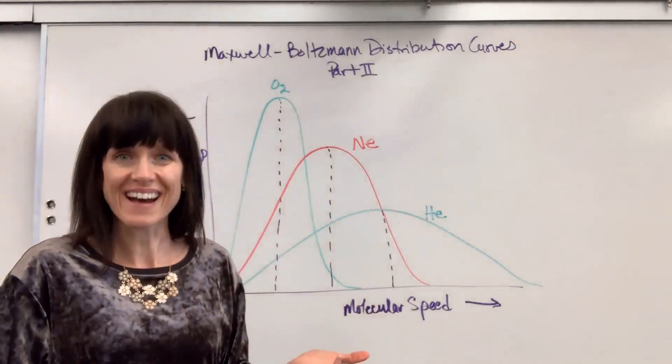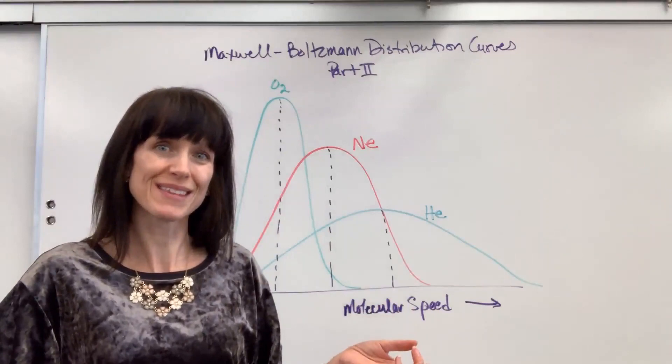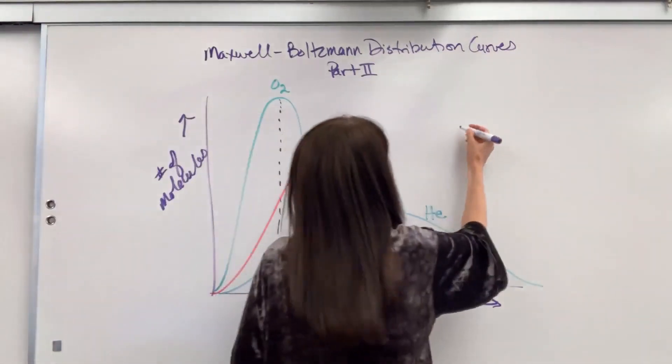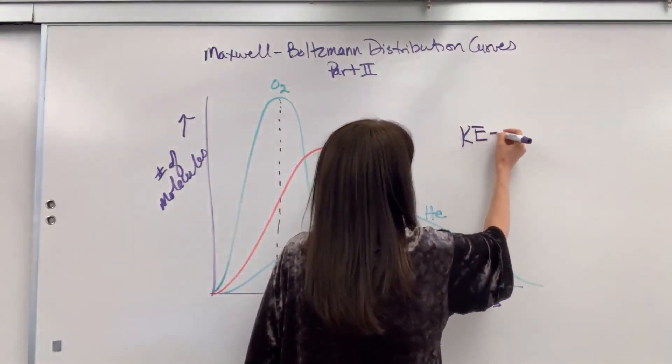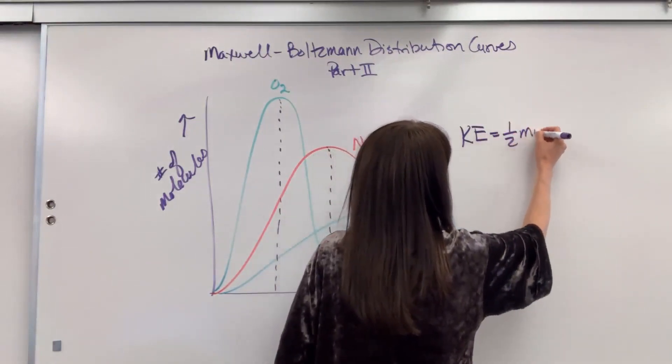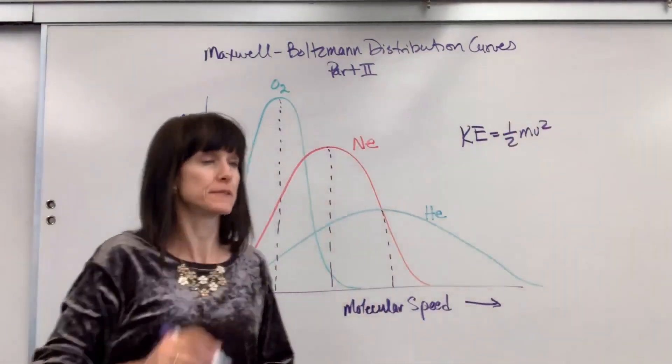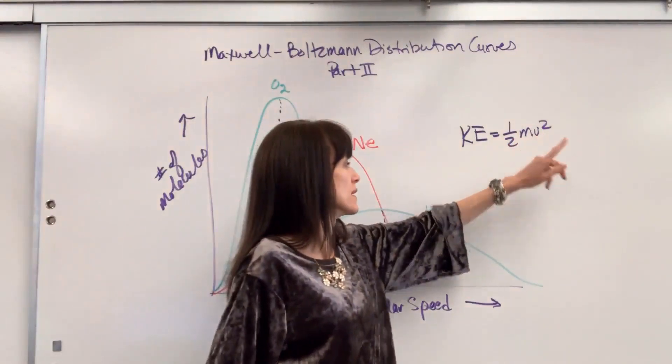Now you know with gases, the smaller the molar mass, the faster it goes. That is because kinetic energy equals one-half mv squared. So the smaller the mass, the higher the speed.